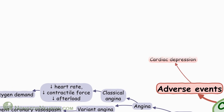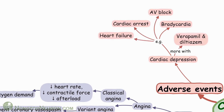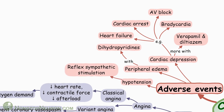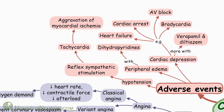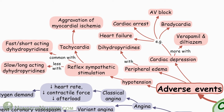Now let's move to adverse events. At higher doses or in susceptible individuals, calcium channel blockers can cause cardiac depression like bradycardia, atrioventricular block, cardiac arrest, and heart failure — the risk is more with verapamil and diltiazem. Peripheral edema is seen with dihydropyridines. Another adverse event with dihydropyridines is hypotension; when excessive, it can cause reflex sympathetic stimulation and resultant tachycardia, which can aggravate cardiac ischemia. This is more common with fast or short-acting dihydropyridines and less common with slow-onset or long-acting dihydropyridines.